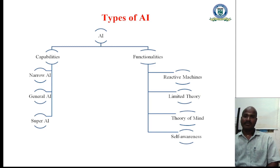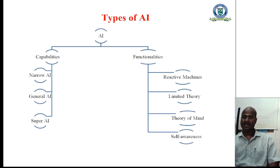Then we go to see the types of artificial intelligence. We can identify artificial intelligence based on capabilities and functionalities. The capabilities of artificial intelligence are: narrow artificial intelligence, general artificial intelligence, and super artificial intelligence.